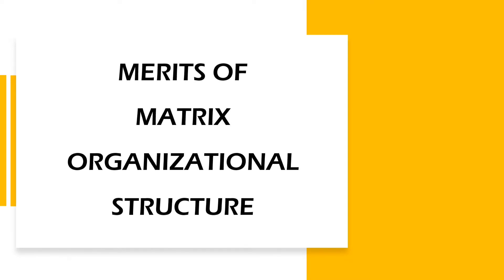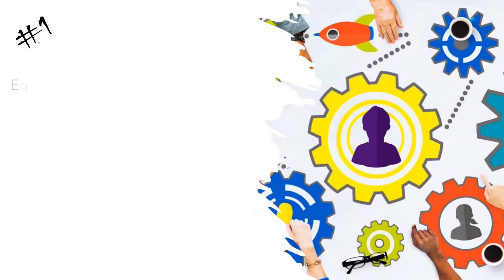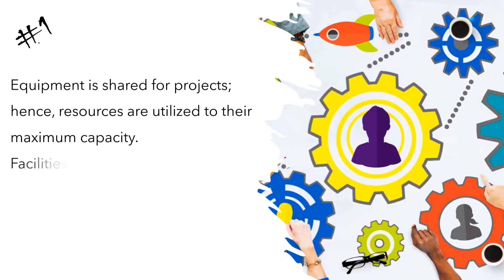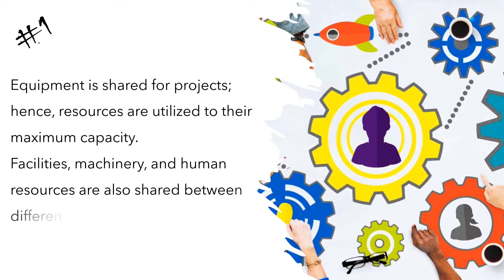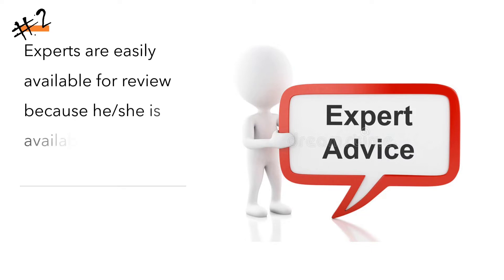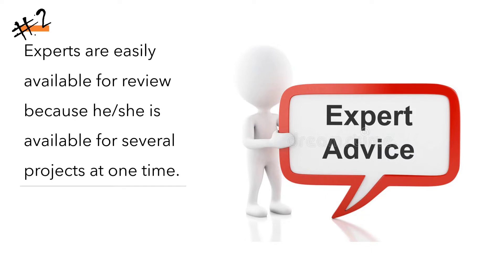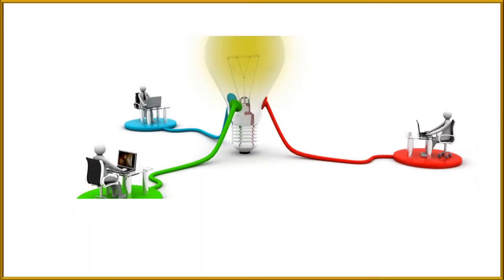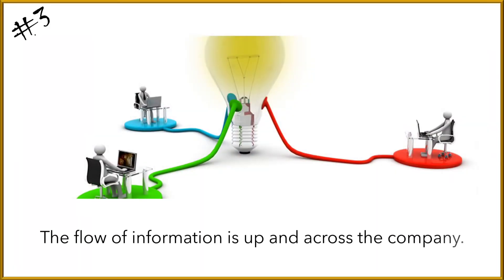Merits or Advantages of Matrix Organizational Structure: Equipment is shared for the projects, hence resources are utilized to their maximum capacity. Facilities, machinery, and human resources are also shared between different projects. Experts are easily available for review because he or she is available for several projects at one time. The flow of information is up and across the company — the horizontal flow offers information about project systems and the vertical flow offers detailed information about disciplinary nature between different projects and different management levels.